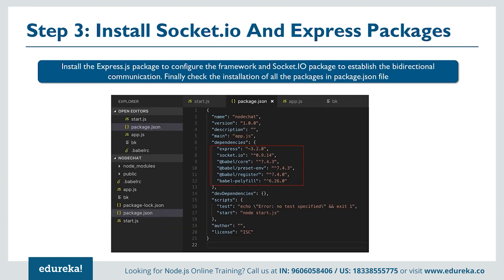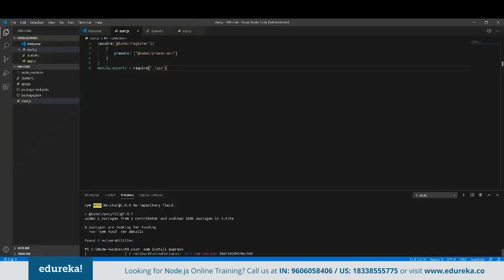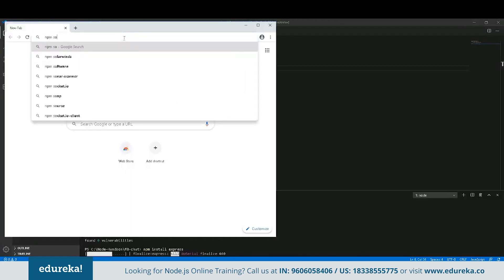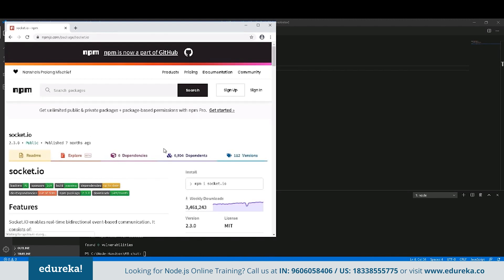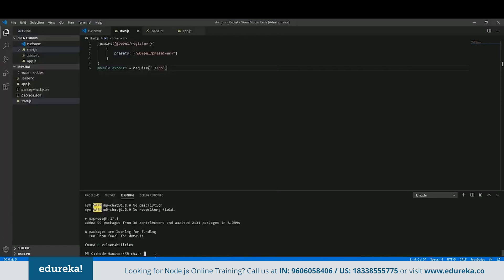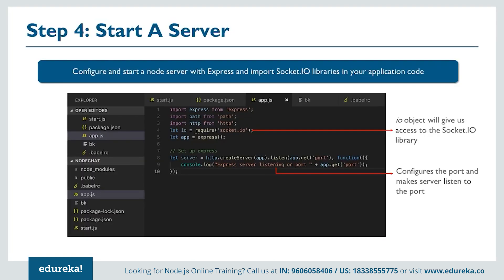Now let's install Express and Socket.io as well. In app.js, we'll import Express and import Socket.io and basically start our server. The io object gives us access to the Socket.io library so we can use it to do all the Socket.io stuff in our application. We also configure the port and make the server listen on it — port 9900, or from the environment variable if set.